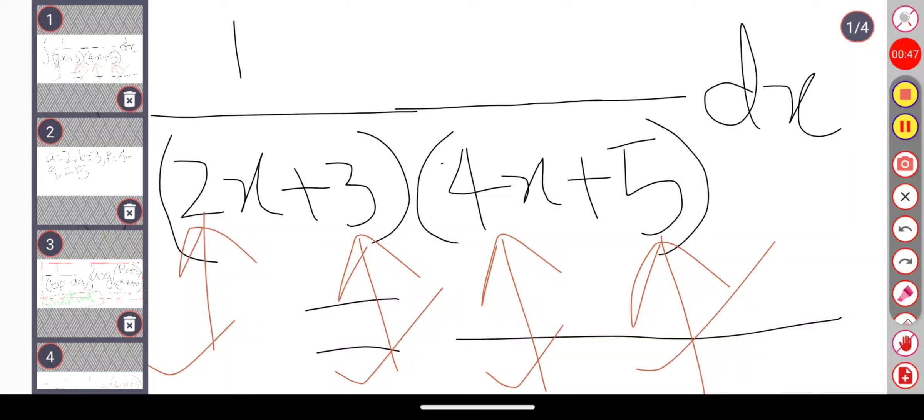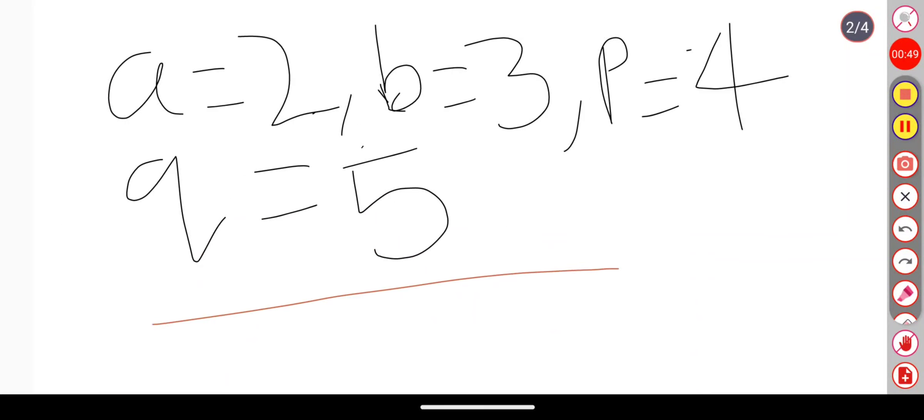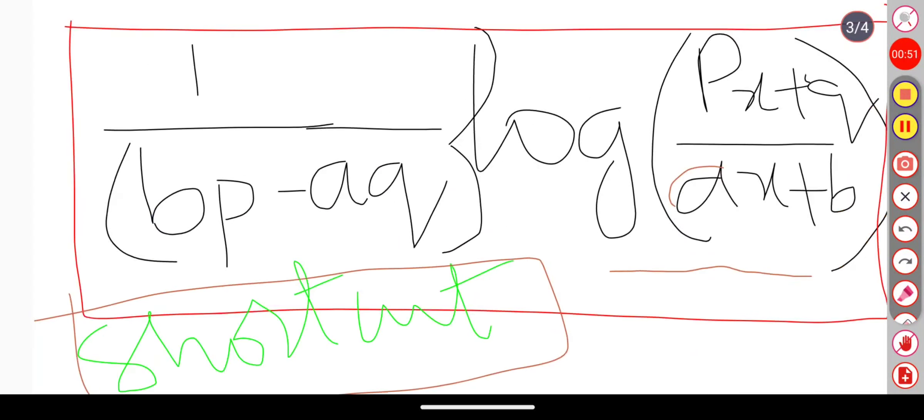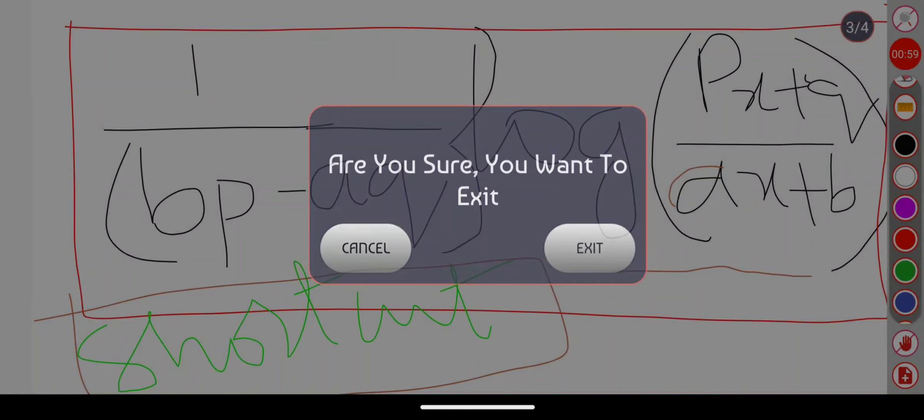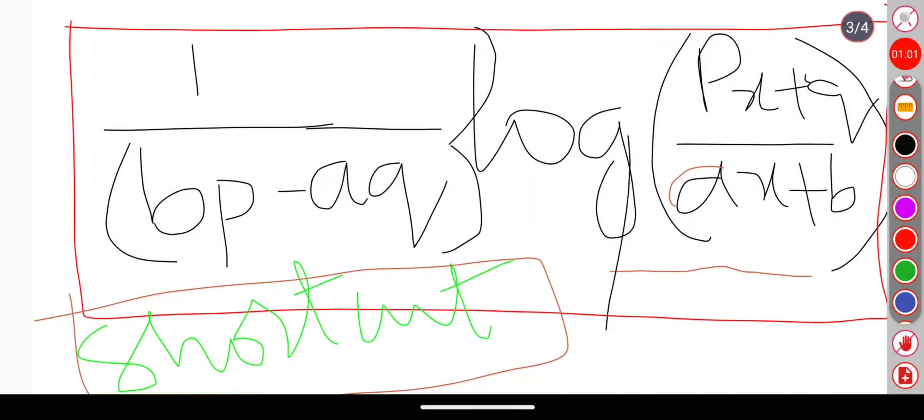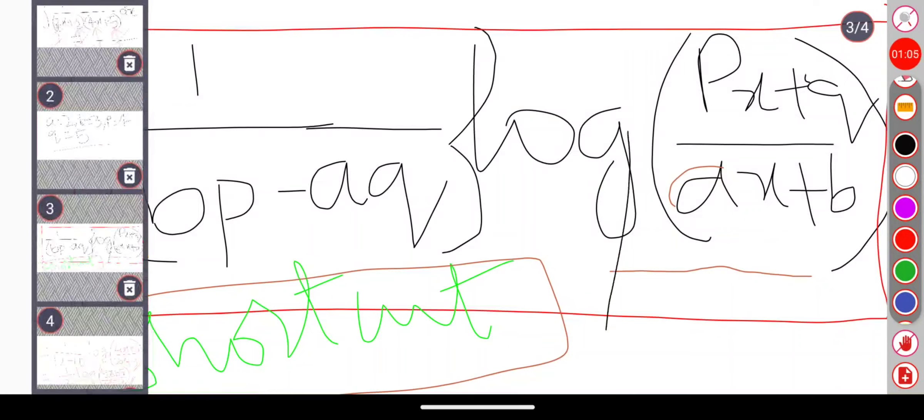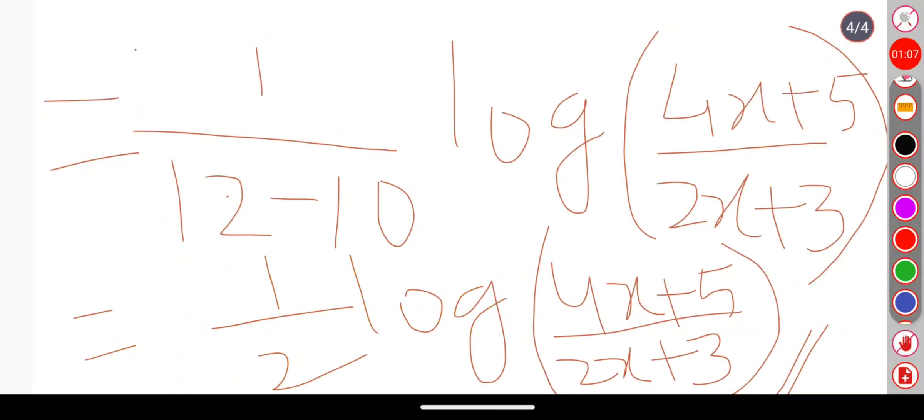So once I obtain a, b, c, d values, what is my next task? My next task is to substitute those all values in this shortcut formula. So if I substitute all these values in the shortcut formula, I will be getting my required answer.